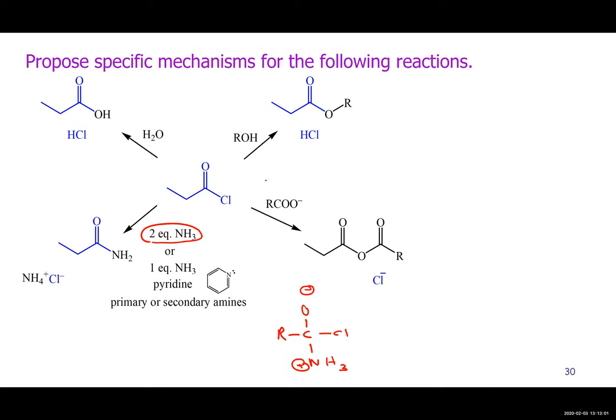To predict the product of any of these reactions, all you need to do is remove a hydrogen and attach it in general. This is the kind of thing that could be a test question — I give you a specific reaction and you have to draw the mechanism out, and you also need to be able to predict the product.